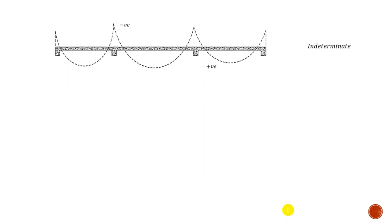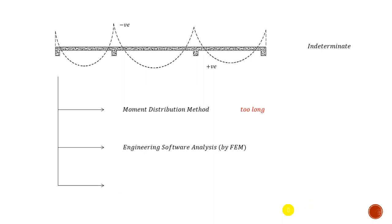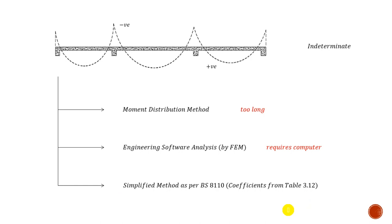You need to go through analysis in order to design the structure. The structure I'm dealing with is indeterminate — that means I cannot just use the three equilibrium equations. This is not simply supported; I probably have hogging moments as well. For an indeterminate system I need either the moment distribution method — which is too long — or engineering software, which is the most common type. Or I can go for the simplified method, which is our focus and the most method taught in schools.